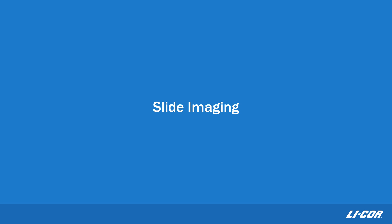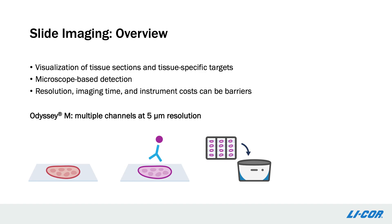The final application I'd like to highlight today is slide imaging. Slide imaging involves the visualization of tissues, sections, and tissue-specific targets using various stains. These experiments require high-powered microscopes for detection and are often limited by microscope resolution, time, and instrument cost. Odyssey-M can image slides in multiple channels at up to 5 micron resolution, providing a convenient alternative option for imaging slides in multiple channels and rapidly triaging a large set of slides.